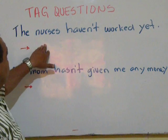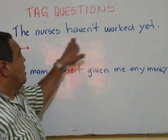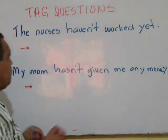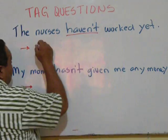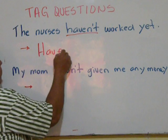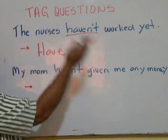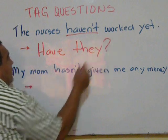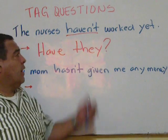Now the nurses haven't worked yet. It's negative, so the tag question has to go in positive. Have. And the nurses? More than one person. The nurses haven't worked yet. Have they?